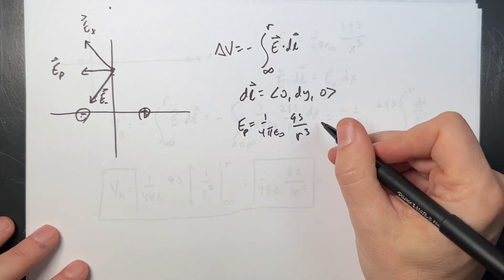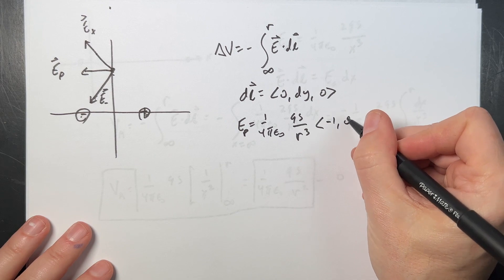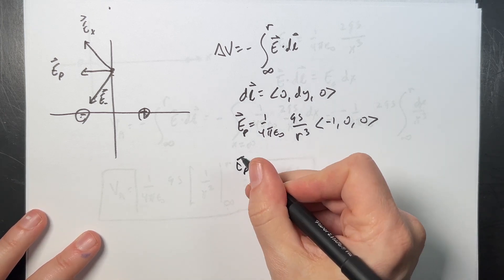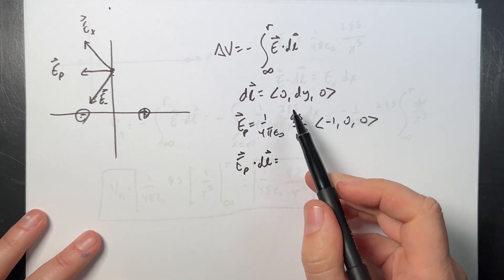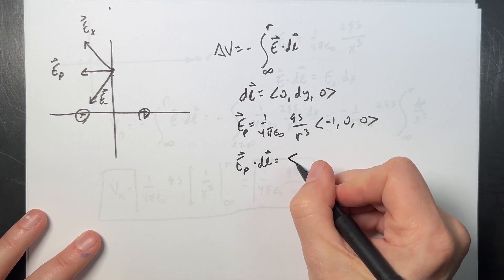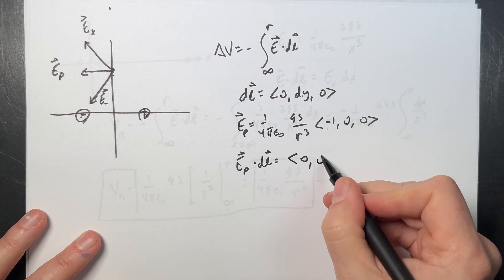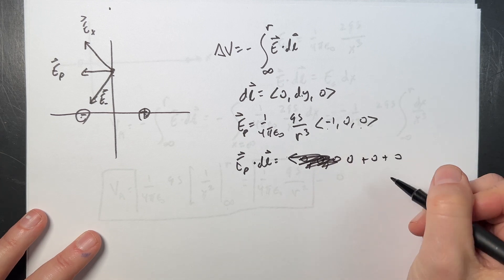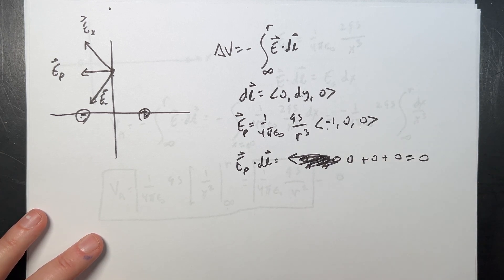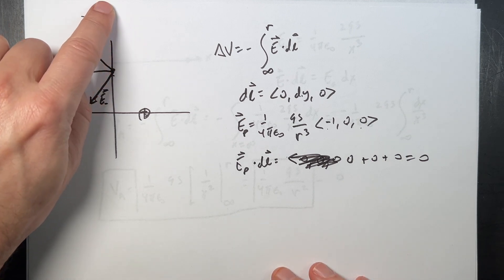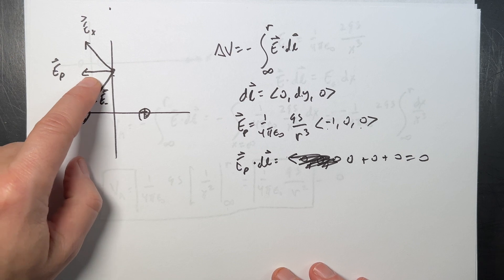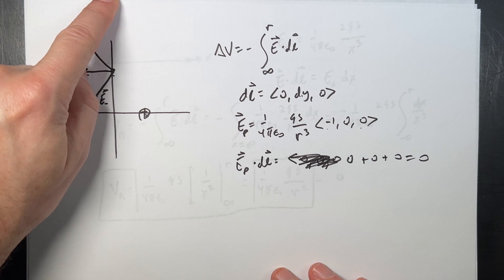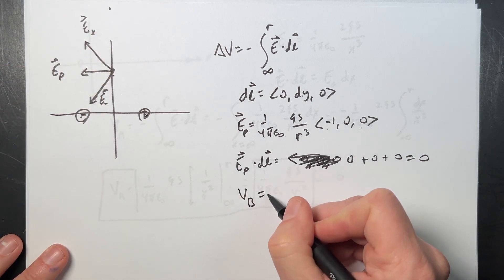So the electric field vector is in the negative x-direction, and DL is in the y-direction. When I compute E_perp · DL, every component gives zero — zero times negative one plus dy times zero plus zero times zero equals zero. So every point along this path has E perpendicular to the path, meaning no change in potential. If the potential at infinity is zero, then VB = 0.